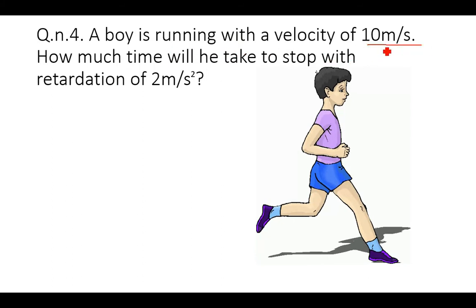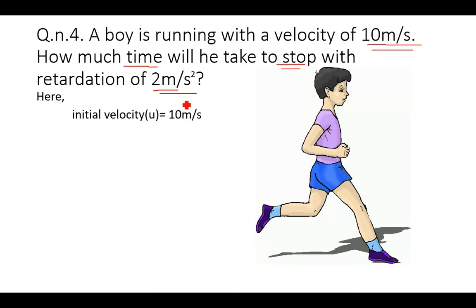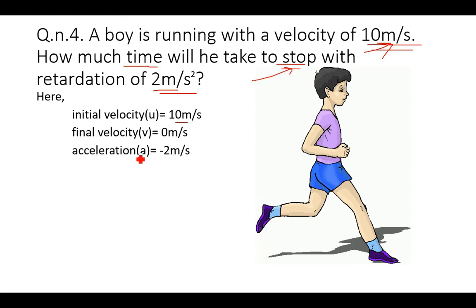Next question: a boy is running with a velocity of 10 meters per second — that is the initial velocity. How much time will he take to stop? Since he stops, the final velocity is 0. Retardation is given as 2 meters per second squared, and since retardation is negative acceleration, acceleration a = −2 meters per second squared.